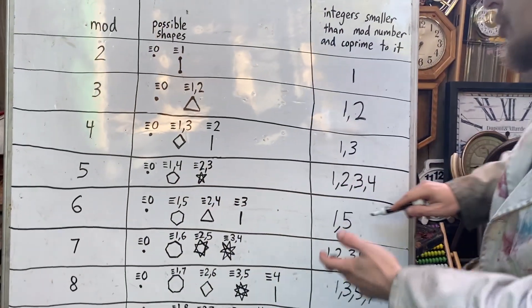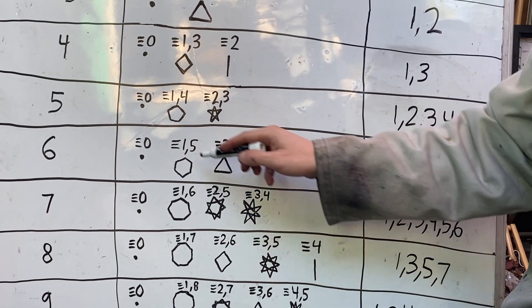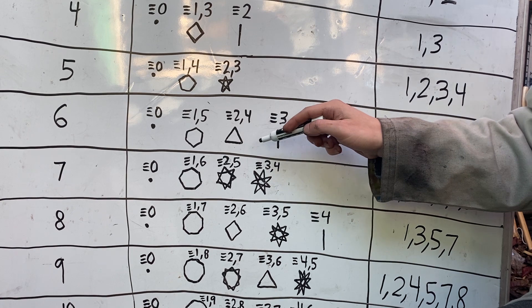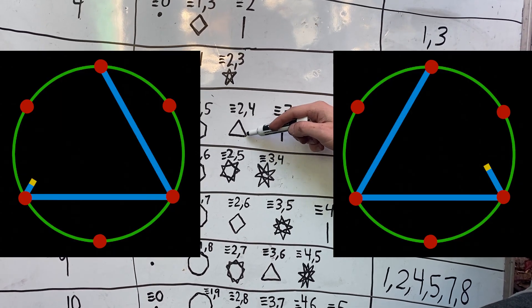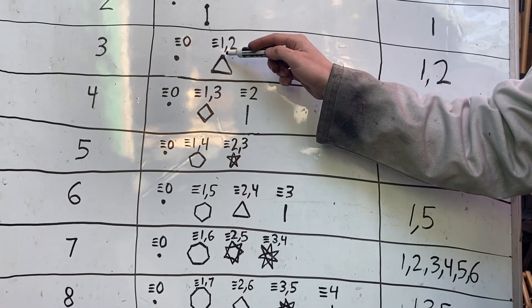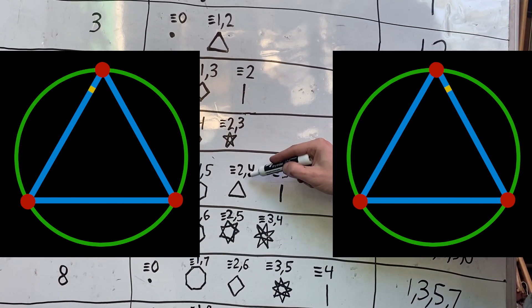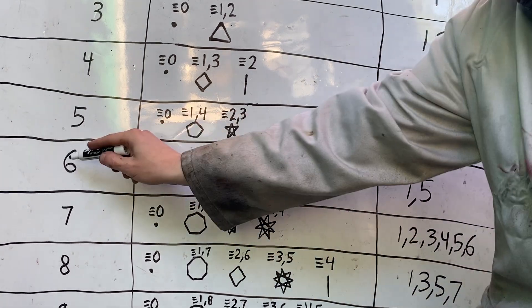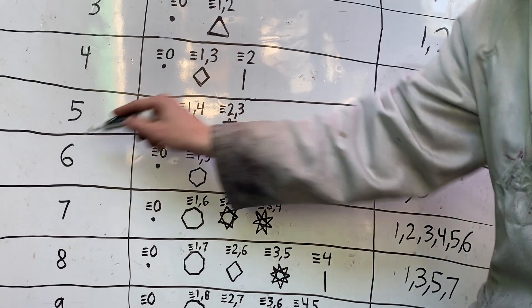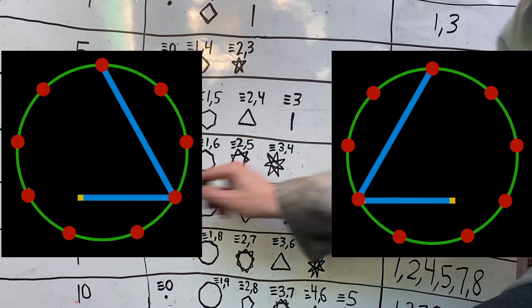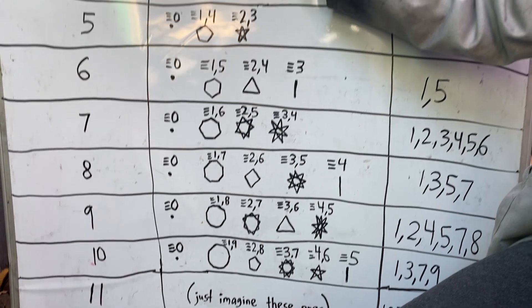With six dots around a circle, only hops of 1 or 5 visit all six dots, since those are the only numbers co-prime to 6 and smaller than it. A hop of 2 or 4 only paints out a triangle among the six dots — the same triangle we get from 1 or 2 hops in mod 3 — because 2/6 simplifies to 1/3 and 4/6 to 2/3. We see this simplification effect whenever the mod and hopping amount reduce like a fraction, such as 3 or 6 in mod 9, or 4 or 8 in mod 12.